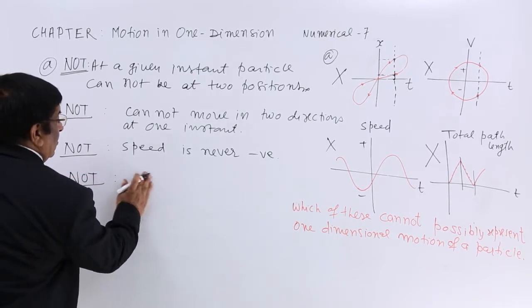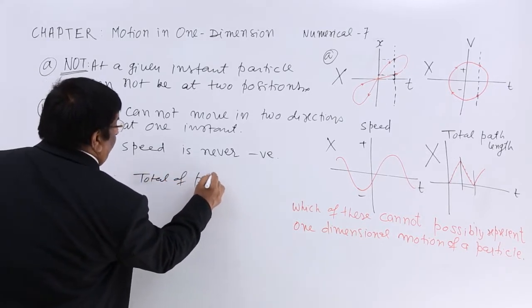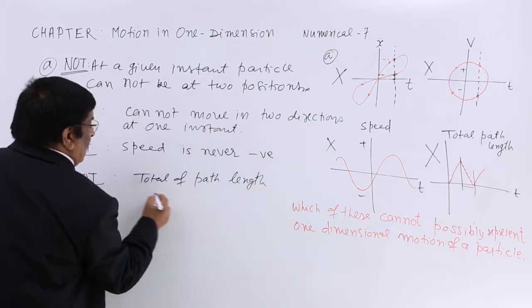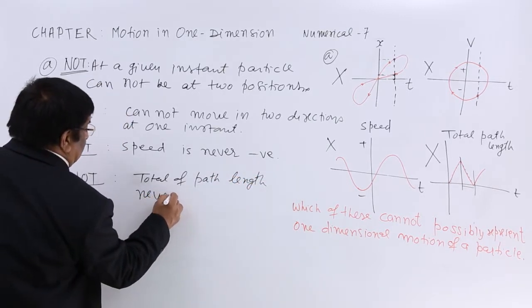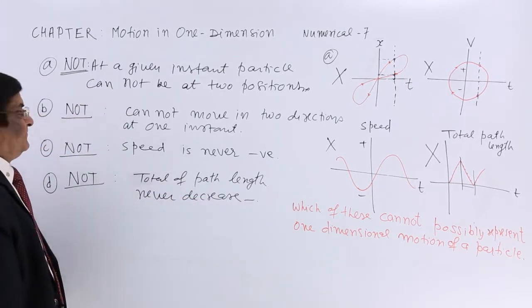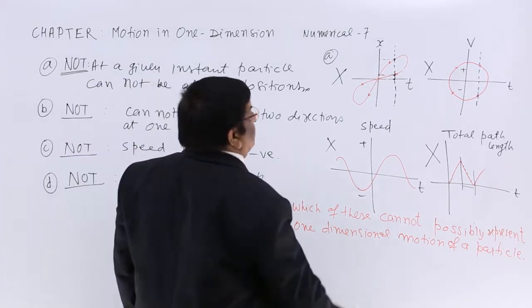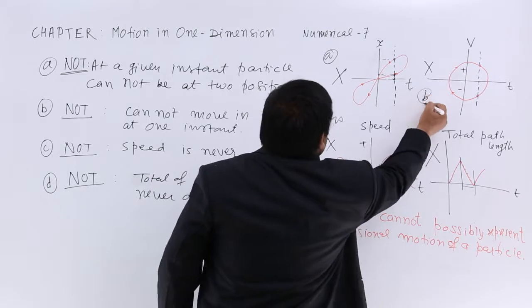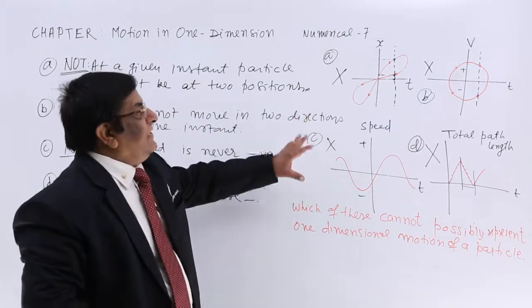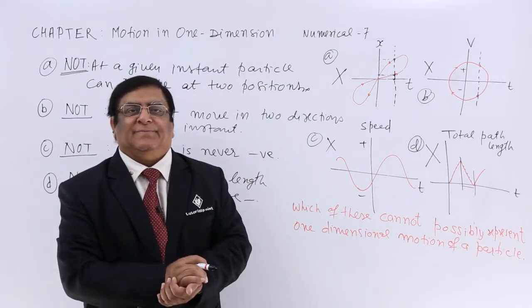Total path length, total of path length never decreases. Never decreases. So all of them are not possible. This gives us an understanding of what is possible and what is not possible. Thank you.